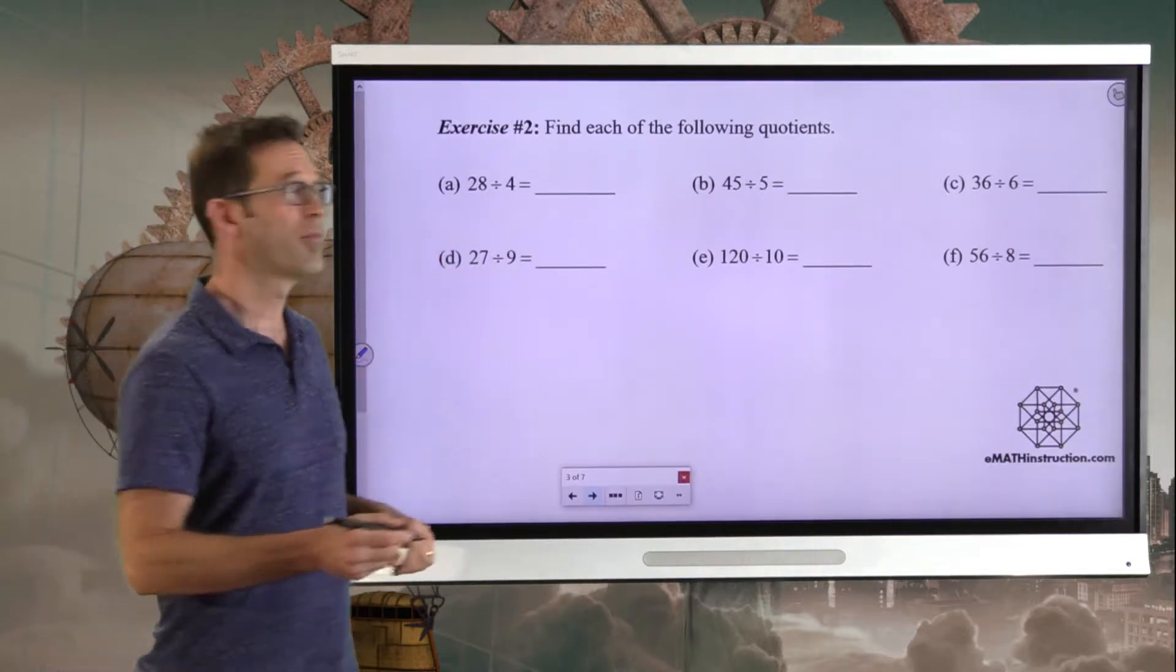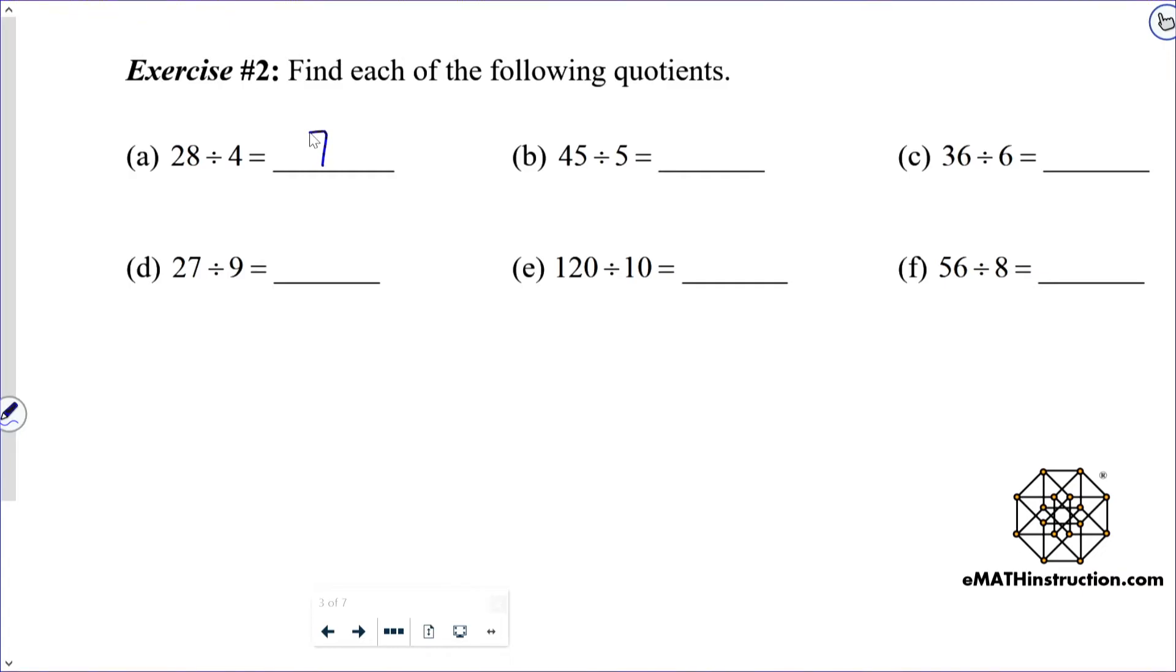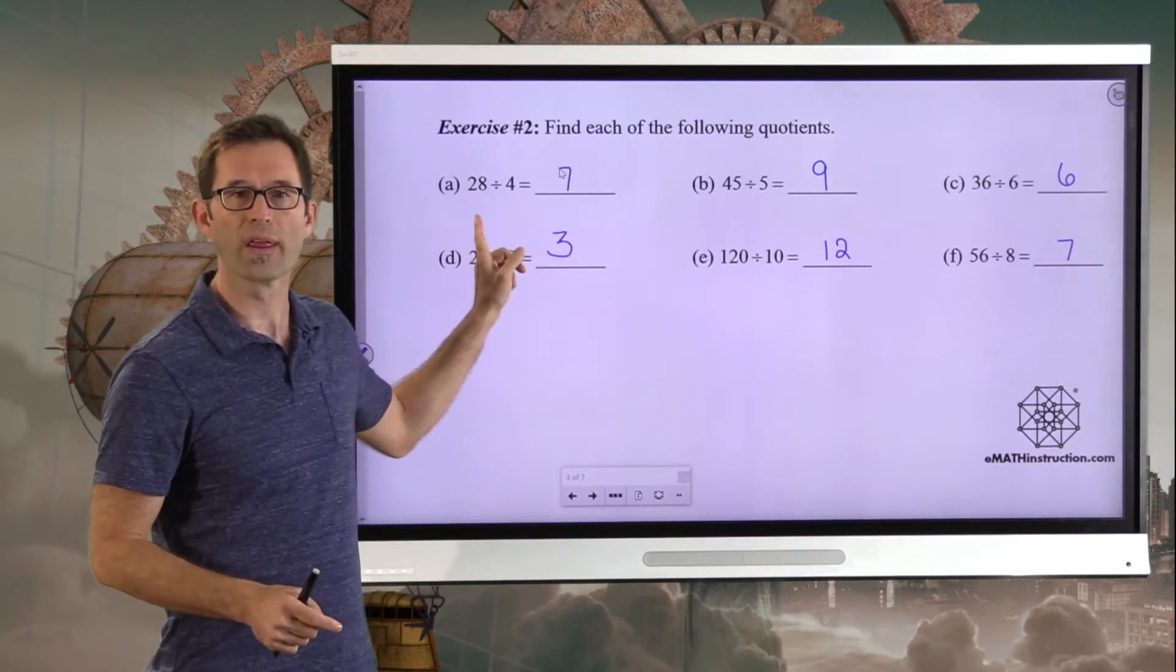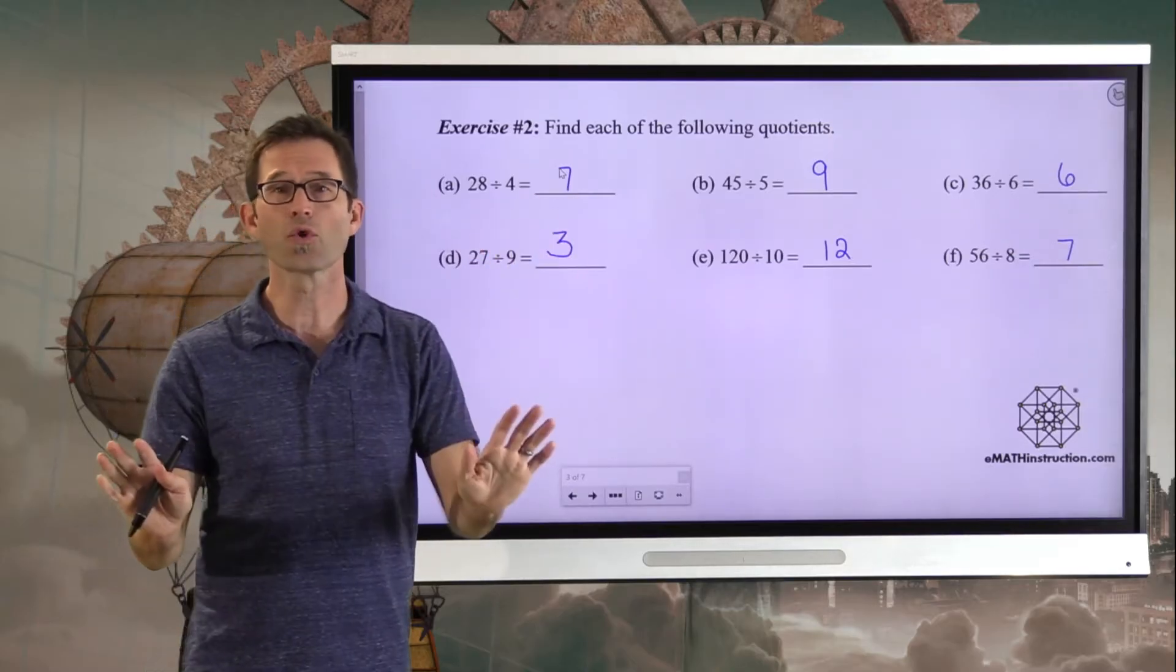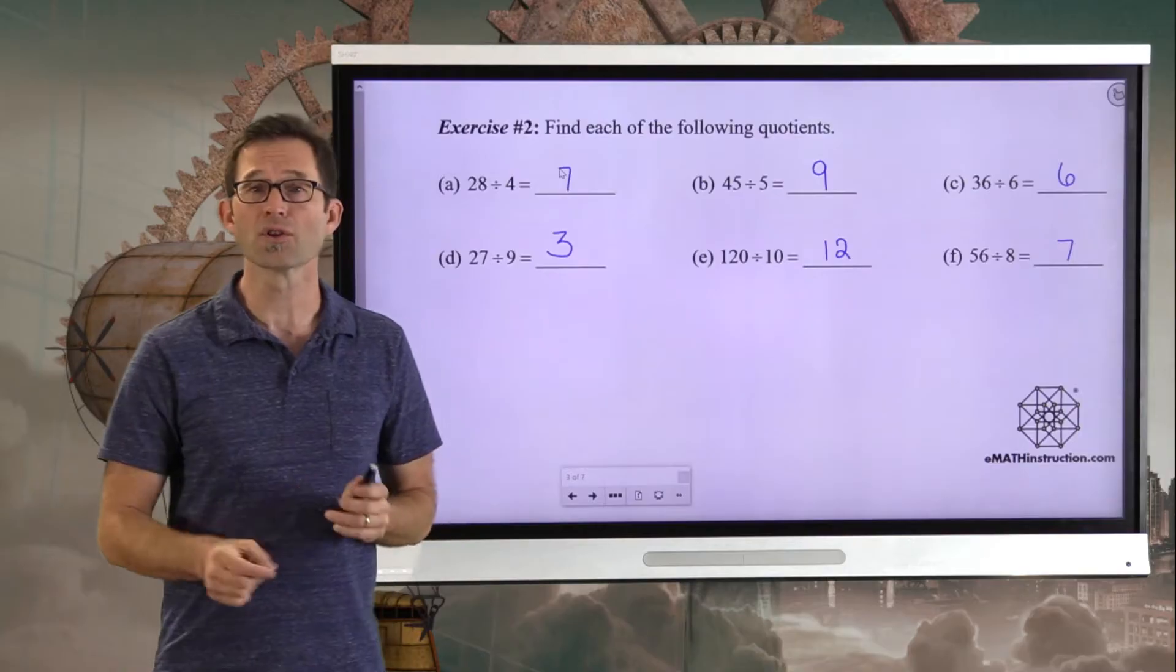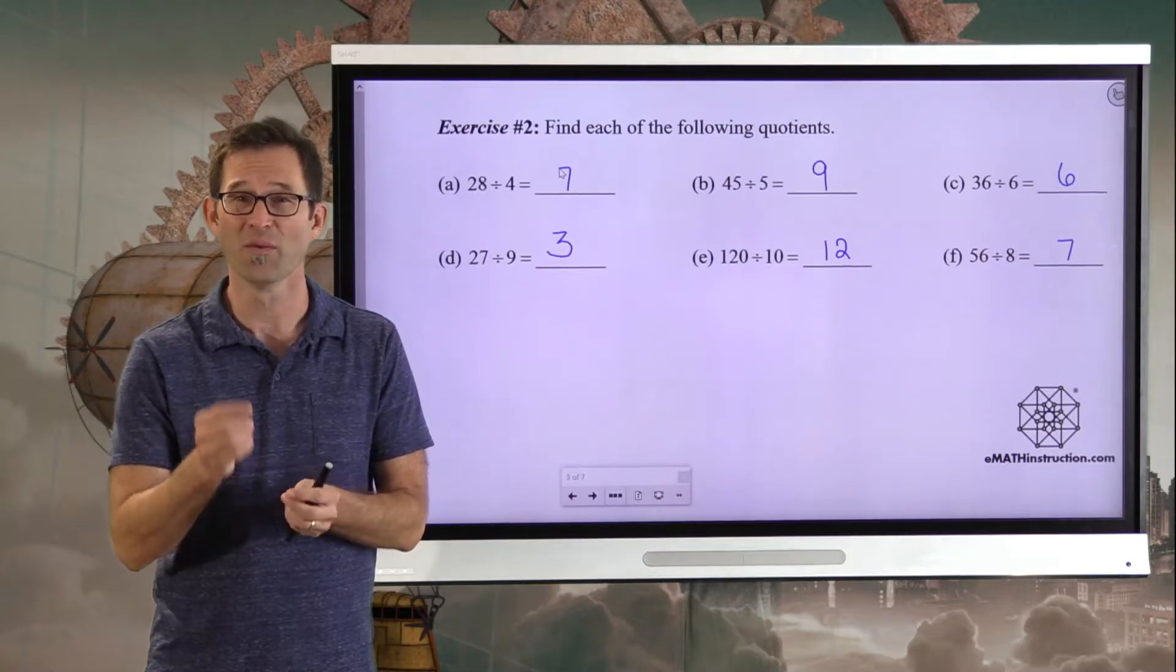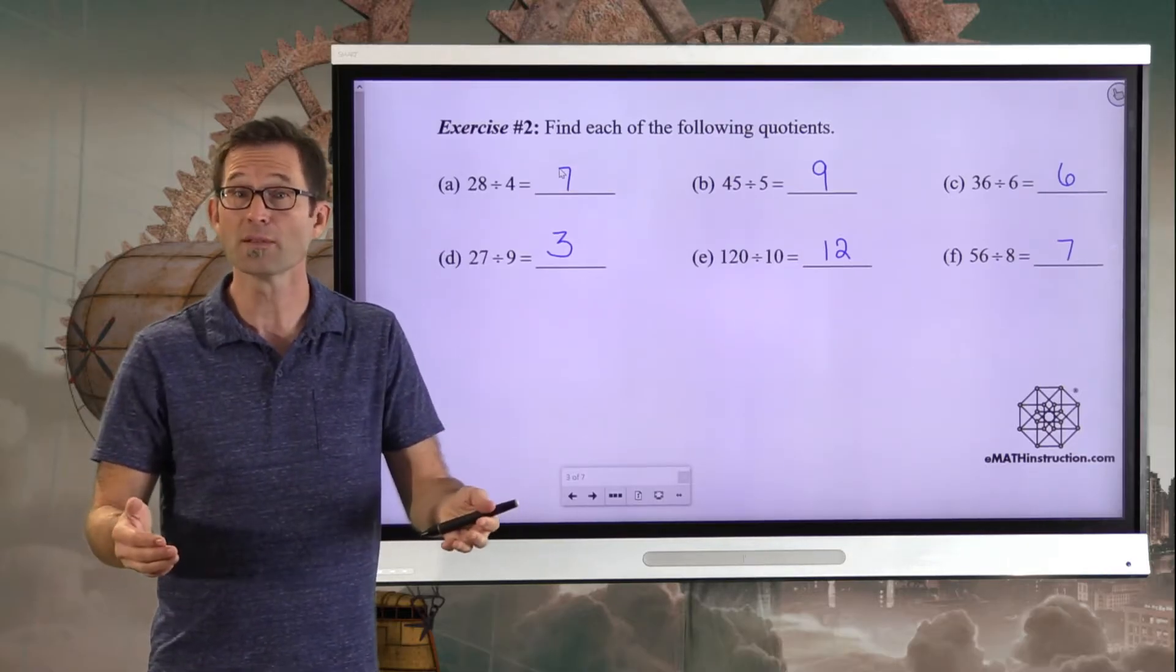All right. Very simply put, 28 divided by 4, well, that's equal to 7. 45 divided by 5, that's equal to 9. 36 divided by 6, that's equal to 6. 27 divided by 9, that's equal to 3. 120 divided by 10, that's equal to 12. And 56 divided by 8, that's equal to 7. And in each case, if you're thinking about it as, well, what would I have to multiply 4 by in order to get 28? Oh, I have to multiply it by 7. That's great. Because you're making that connection between division and multiplication. And that connection gets used all the time. We're going to see it in the next problem as well.